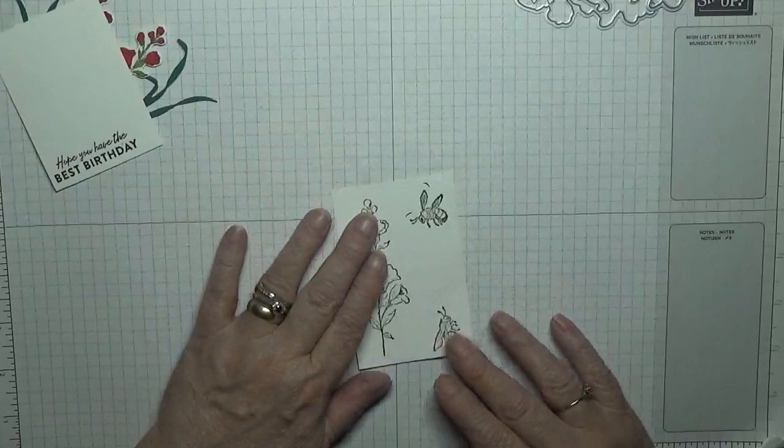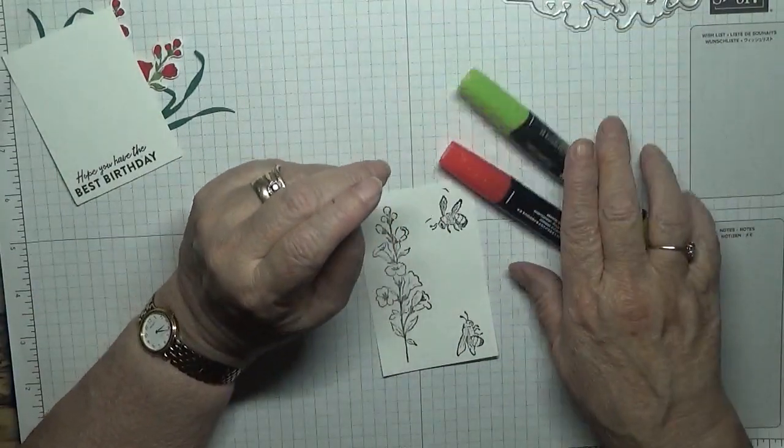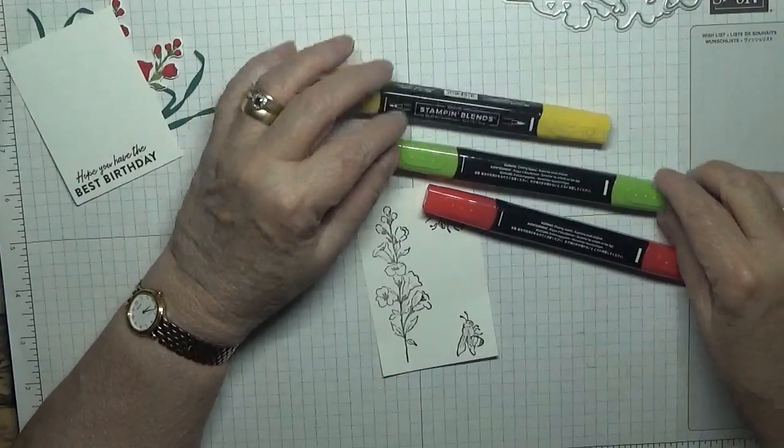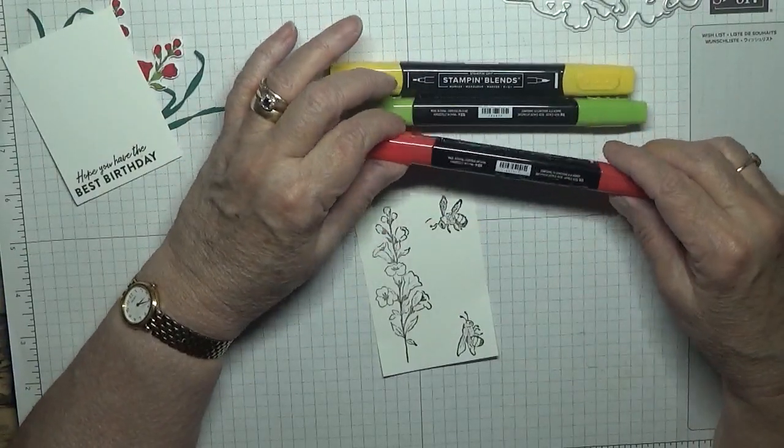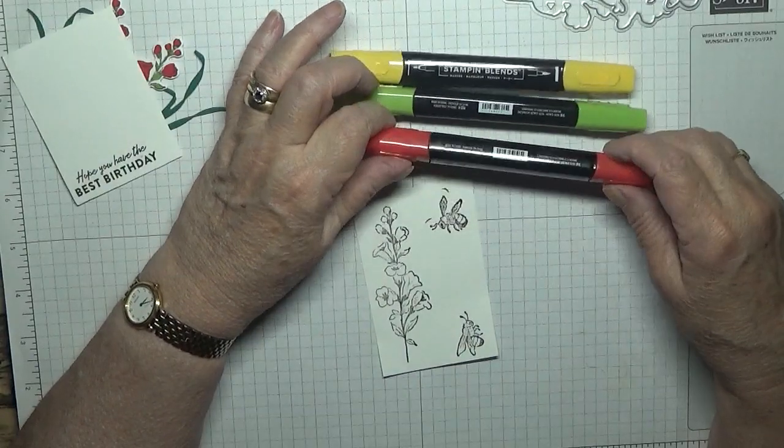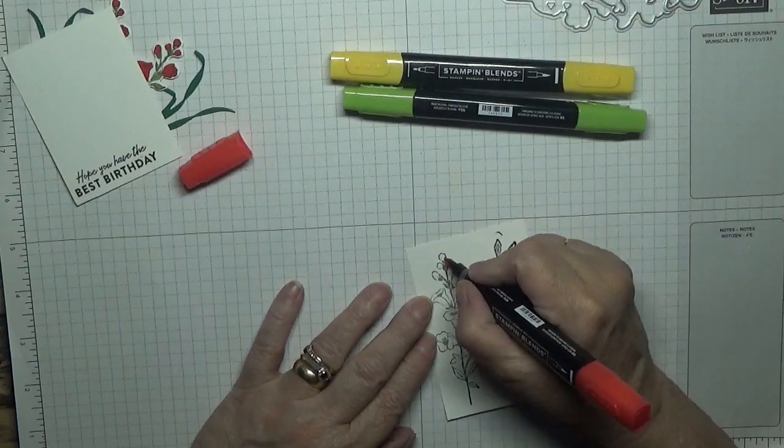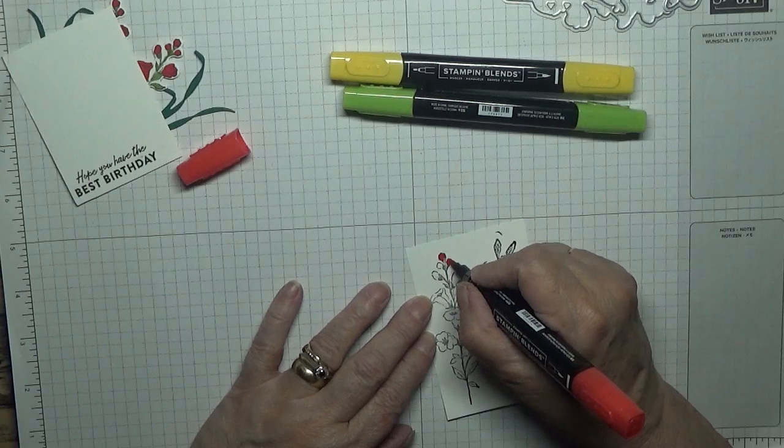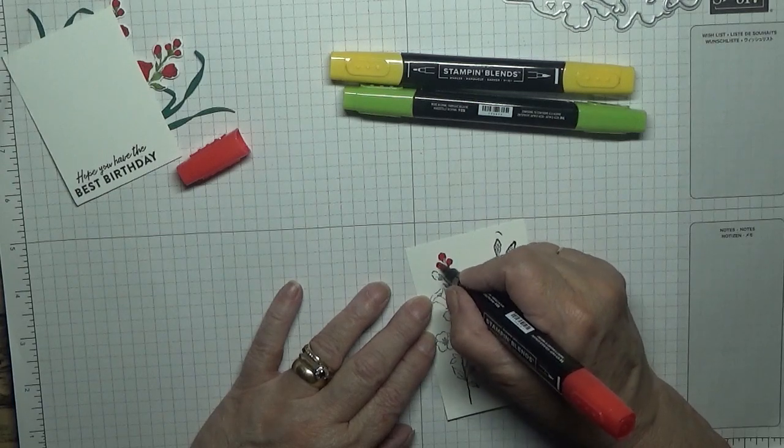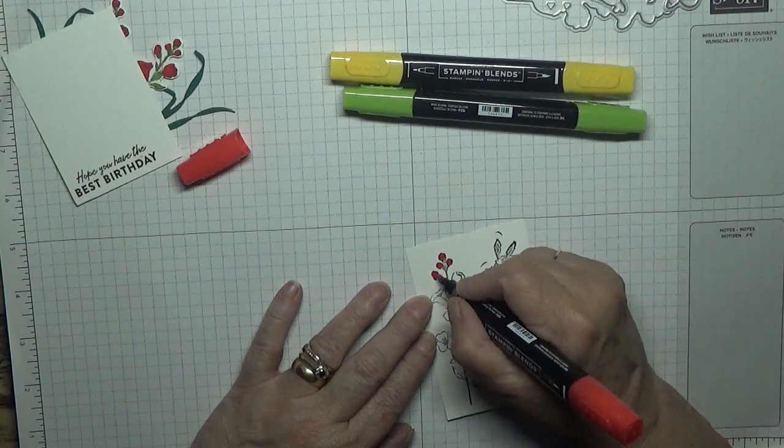We put that one side. This one we're going to colour in, and we've got Daffodil Delight, Dark Granny Apple Green, and Poppy Parade, and we're just going to colour in all the flowers with the Poppy Parade, nothing spectacular.